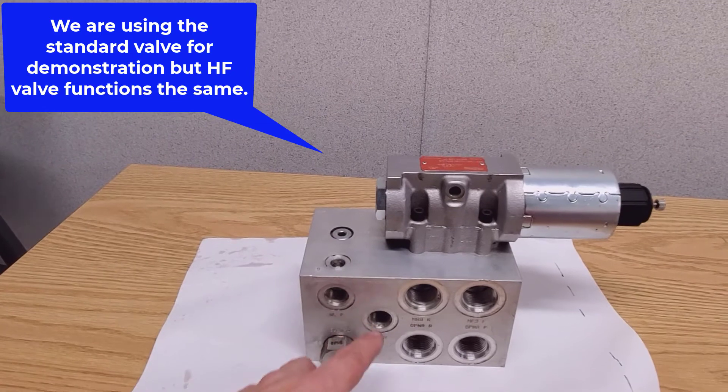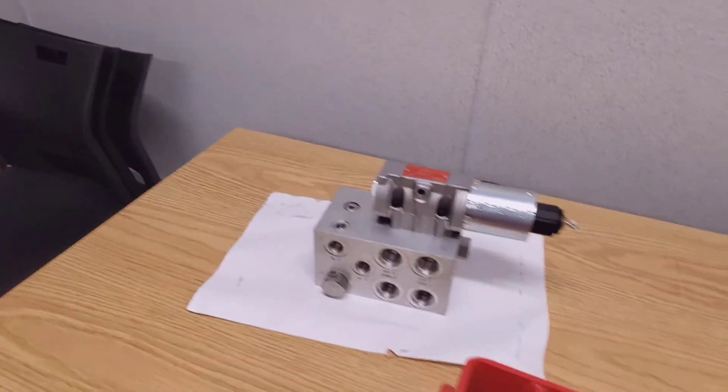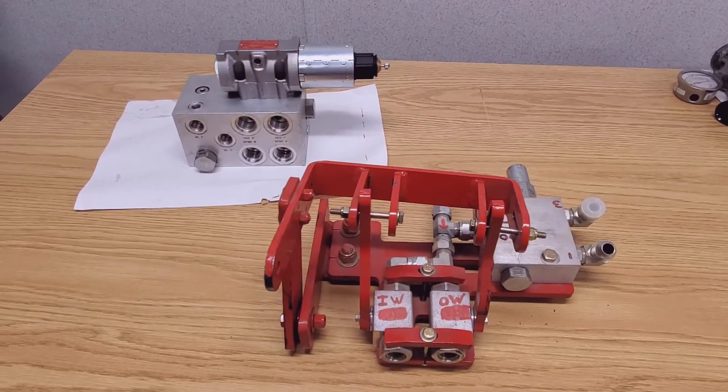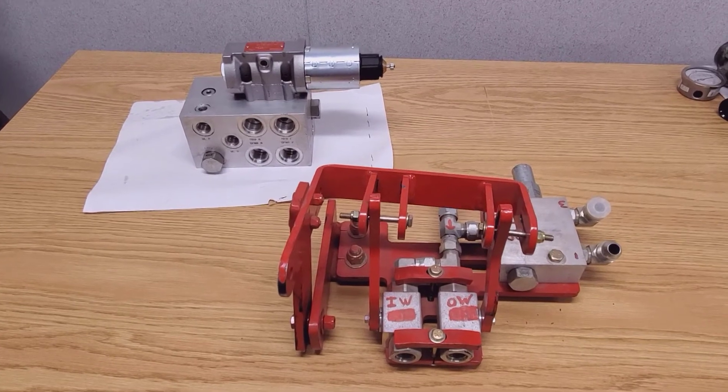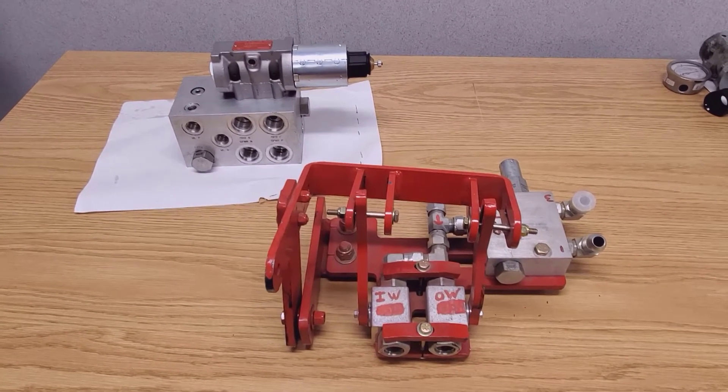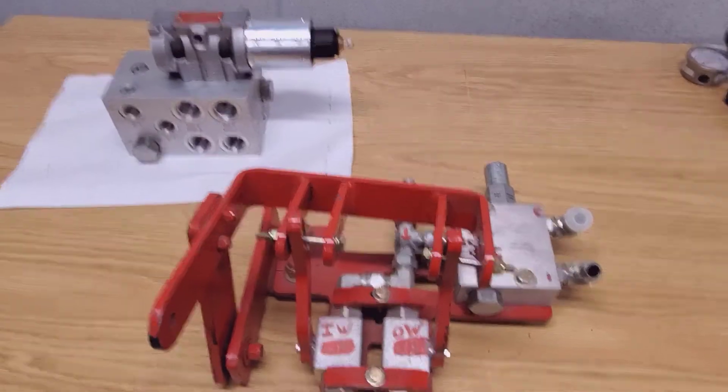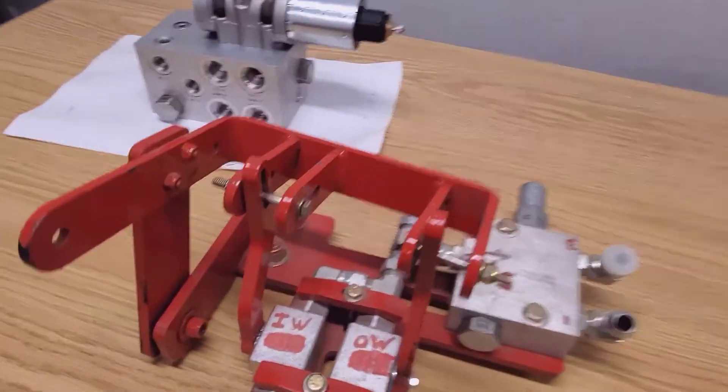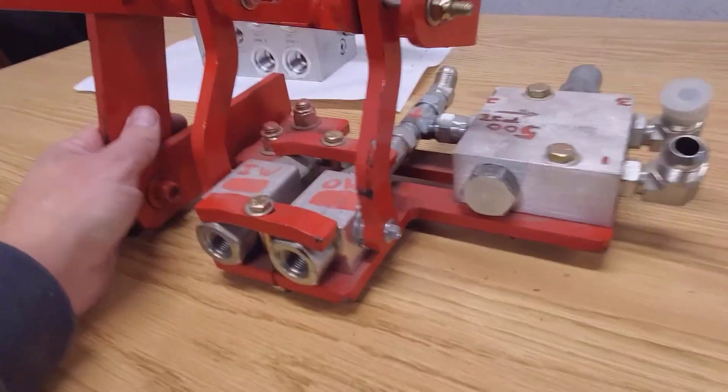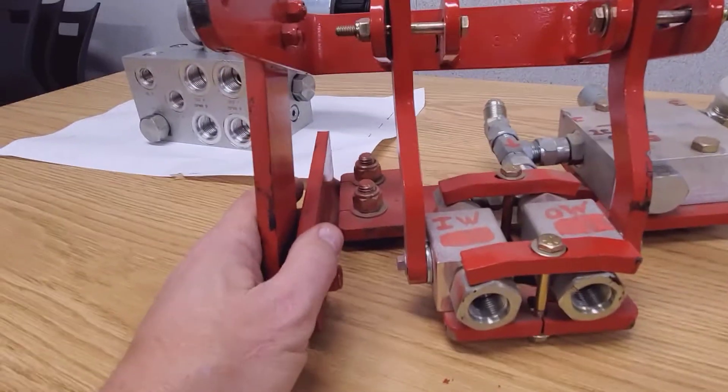It's the same idea on the high flow block. Depending on the size of the drill, it comes to a sequencing valve setup and pressure reduction system. So what that's there for is to make sure that everything works in the right order.